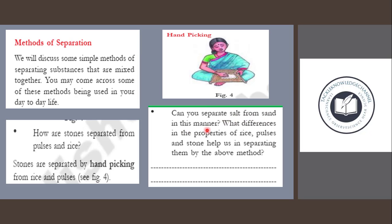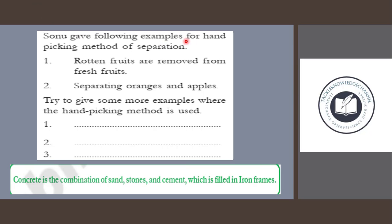Can you separate salt from sand in this manner? What differences in the properties of rice, pulses, and stones help us in separating them by the above method? Rotten fruits are removed from fresh fruits by hand-picking. Oranges and apples can also be separated this way. Try to give some more examples where the hand-picking method is used.